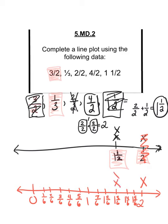2 x's go above 1 and 1 half. Got that. And then 1 third is equivalent to 2/6, and I can prove it.